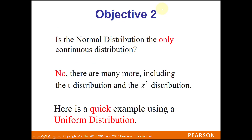Is the normal the only continuous distribution? No — there are many more. But we're going to focus on the normal, then the t-distribution, and in Chapter 12 the chi-squared distribution. The next example is meant to emphasize that probabilities equal areas.